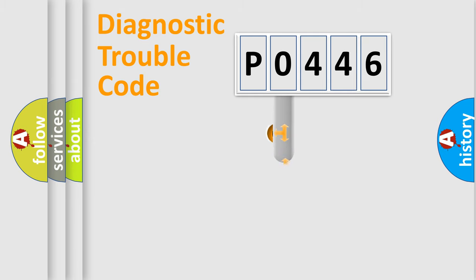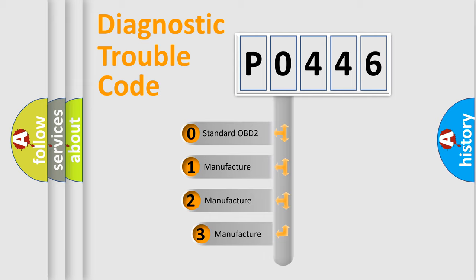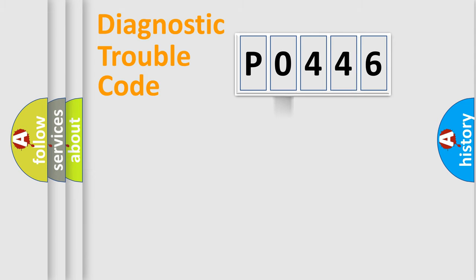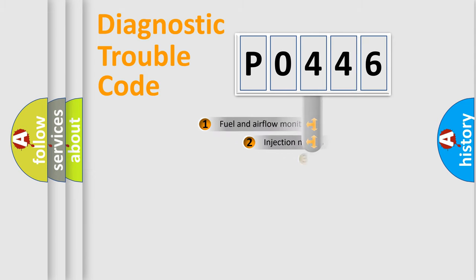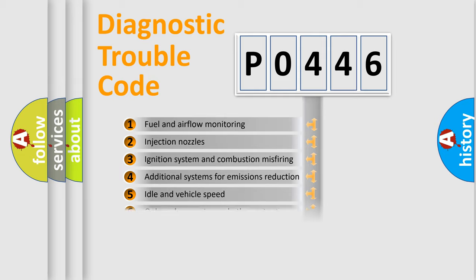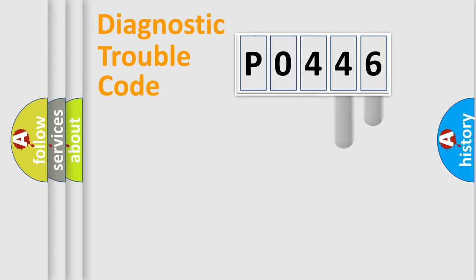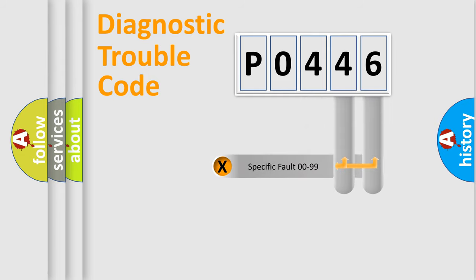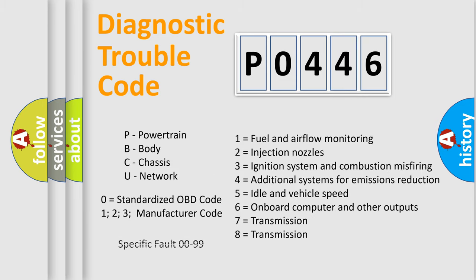This distribution is defined in the first character of the code. If the second character is expressed as zero, it is a standardized error. In the case of numbers 1, 2, or 3, it is a more specific expression of a car-specific error. The third character specifies a subset of errors. The distribution shown is valid only for the standardized DTC code. Only the last two characters define the specific fault of the group. Note that such a division is valid only if the second character code is expressed by the number zero.